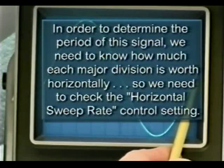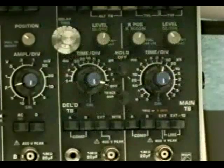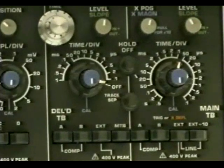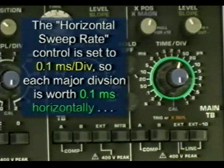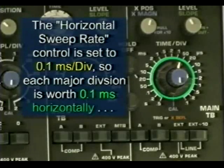How much each major division is worth horizontally, we need to check the horizontal sweep rate control setting. This control sometimes is called the time per division control. In this example, the horizontal sweep rate control is set to 0.1 milliseconds per division, so each major division horizontally is worth 0.1 milliseconds.